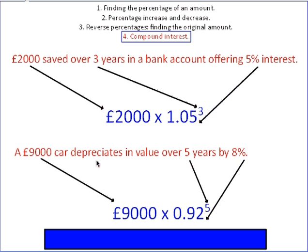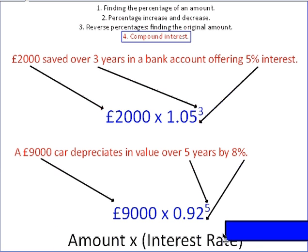If it ever says depreciate, or that a value is going down over a number of years, then you must remember that this percentage value will be under 1. So, if 1 represents the original amount, if that's going to go down, then obviously this value must be lower than 1. So, because it's gone down by 8%, the value is 0.92. So, in terms of a way to remember it, it's the amount times the interest rate to the power of the time.